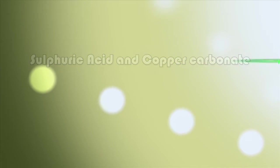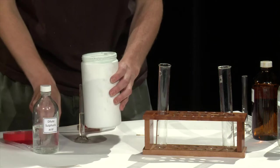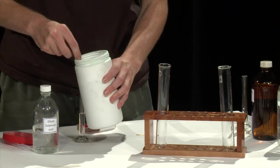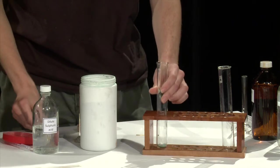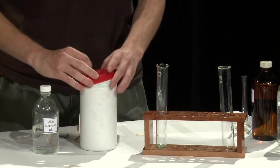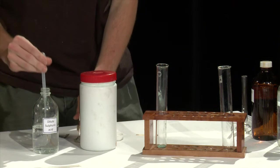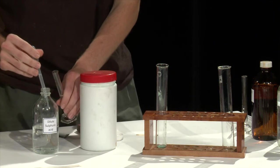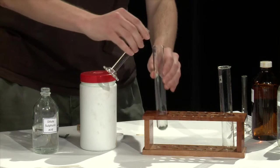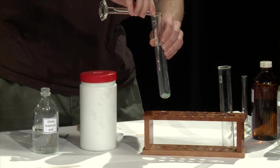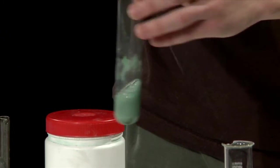Experiment 2. Add a spatula load of copper carbonate to a boiling tube. Next, add 10 milliliters of dilute sulfuric acid. Swirl the tube and record down any observations you see.